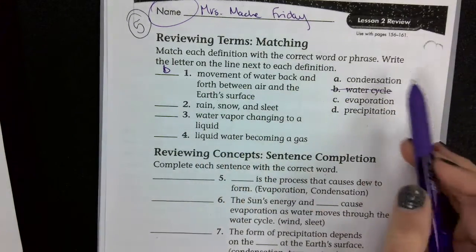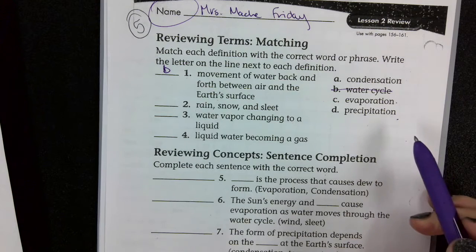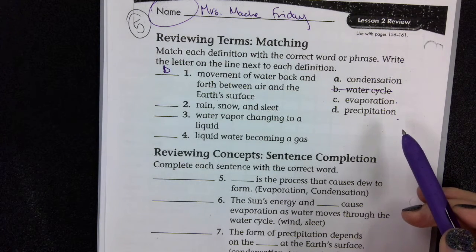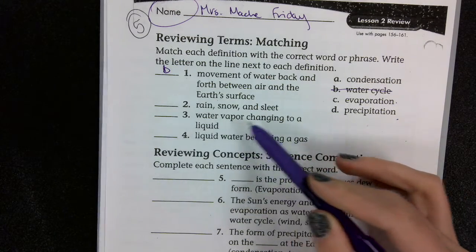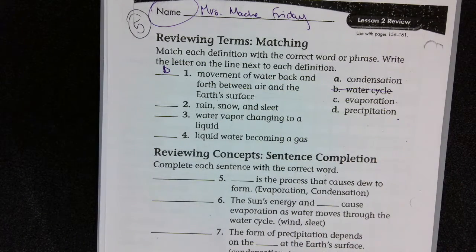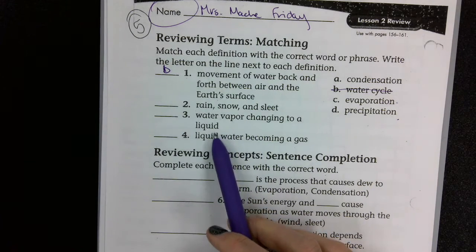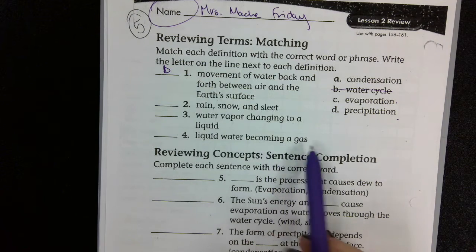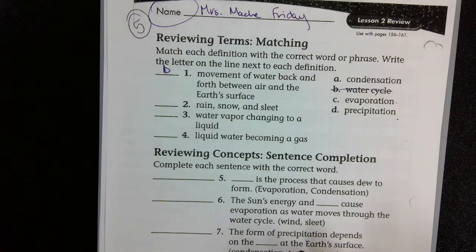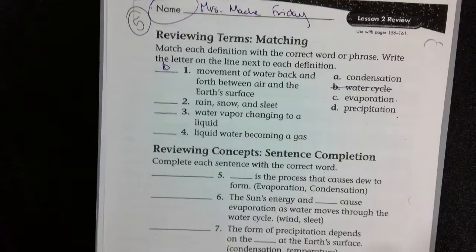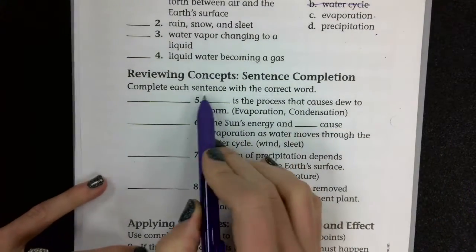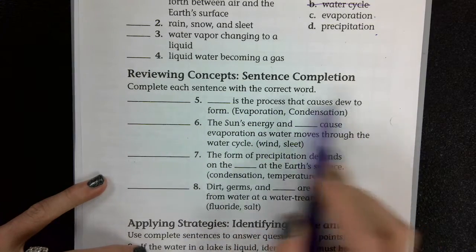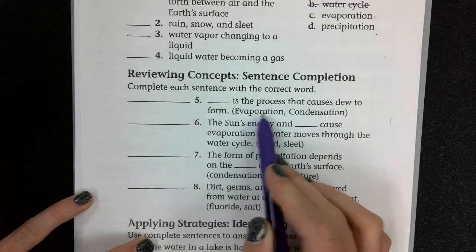Number two: rain, snow, and sleet — is that condensation, evaporation, or precipitation? Number three: water vapor changing into a liquid. Number four: liquid water becoming a gas.